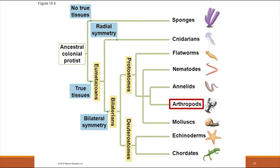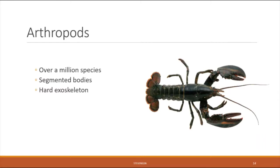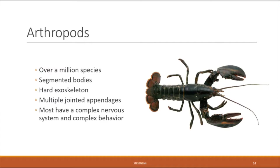The next phylum is the arthropods, by far the most numerous group of all animal phyla, with over a million different species identified so far. Arthropods are known for having segmented bodies, a hard exoskeleton, and multiple jointed appendages. Most arthropods also have a highly complex nervous system which allows them to exhibit complex behaviors.